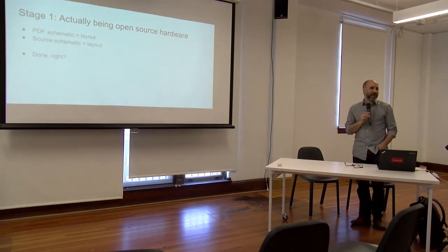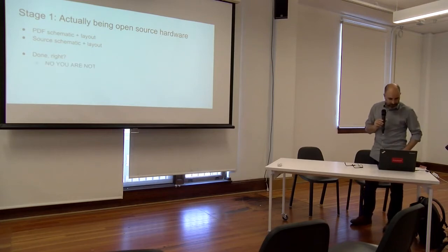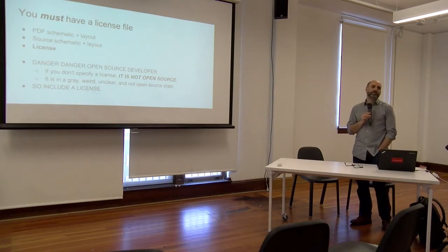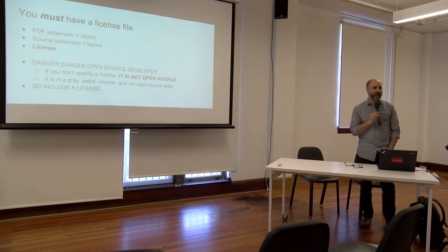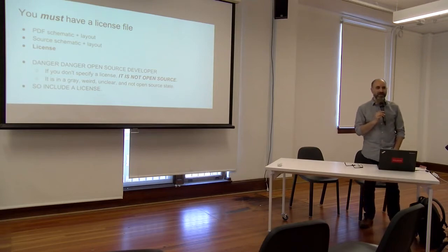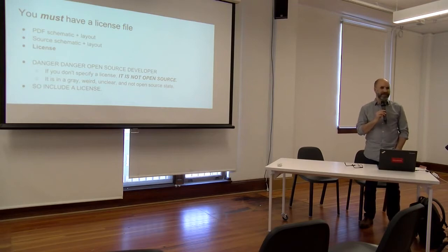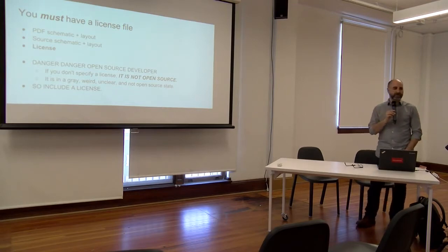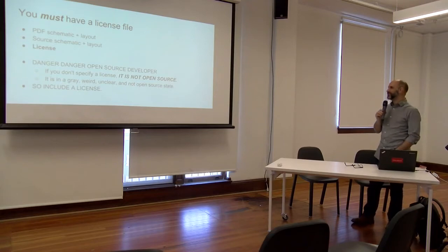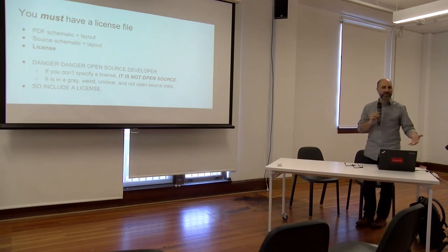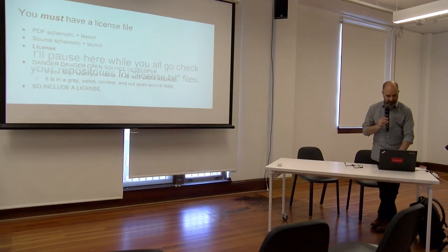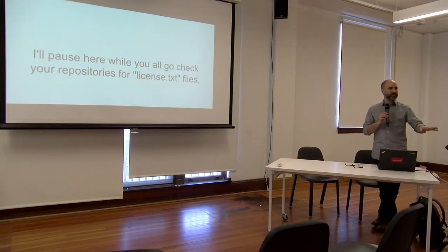So what if we just give them the source schematic and layout — then we're done, right? Nope. The thing people don't talk about, our dirty little secret, is the license file. If you don't have a license file, it is not open source — period. It is some bizarre nondescript copyright thing that someone could sue you over. So do not release something without a license, period — even if the license says 'you may not use this.' That's better than no license whatsoever. Things on the web are not free — they're still subject to copyright.